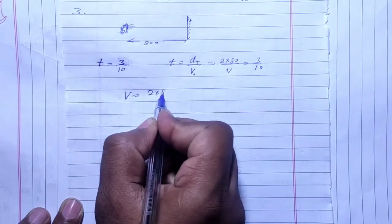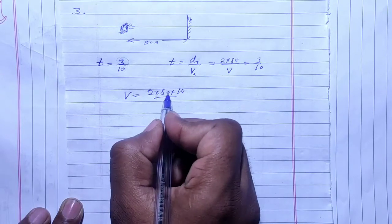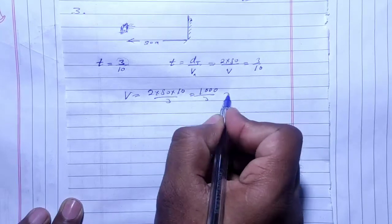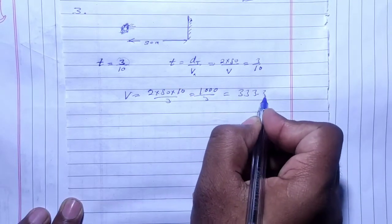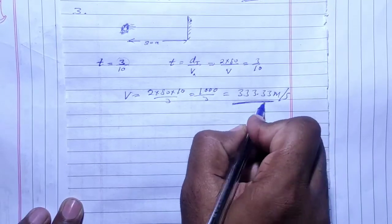2 into 50 into 10 by 3, so 10 into 10 is 1000 by 3. That's 333.33 meters per second. This is the speed sound travels.